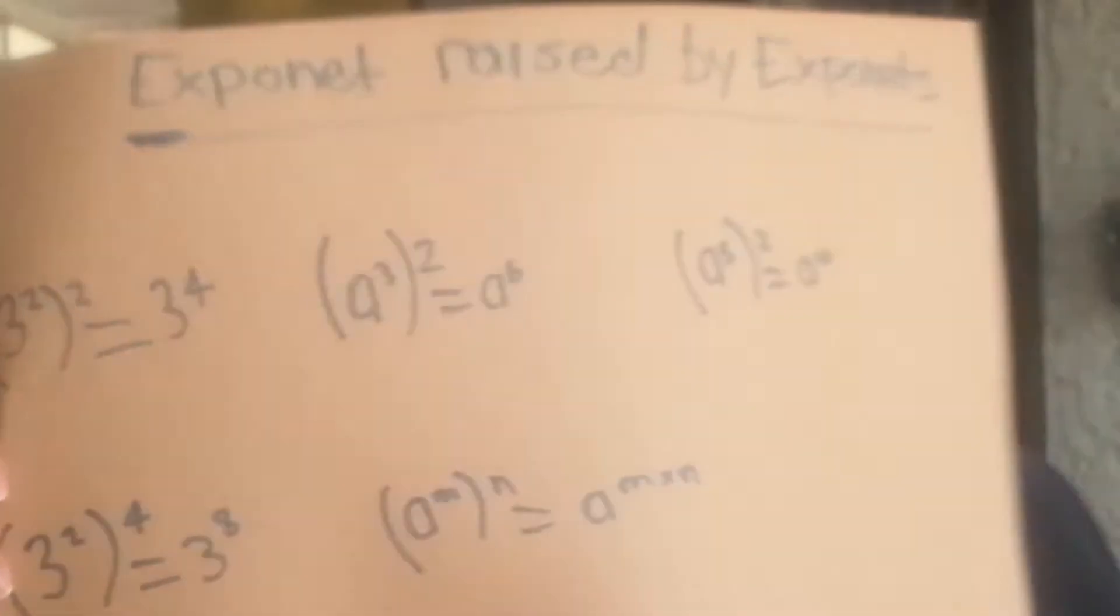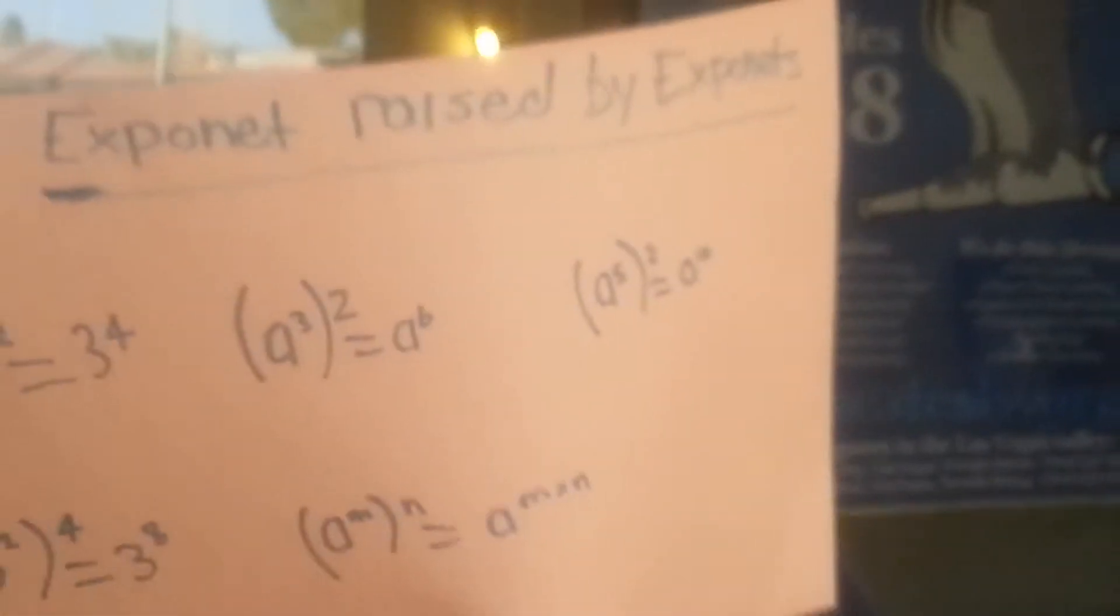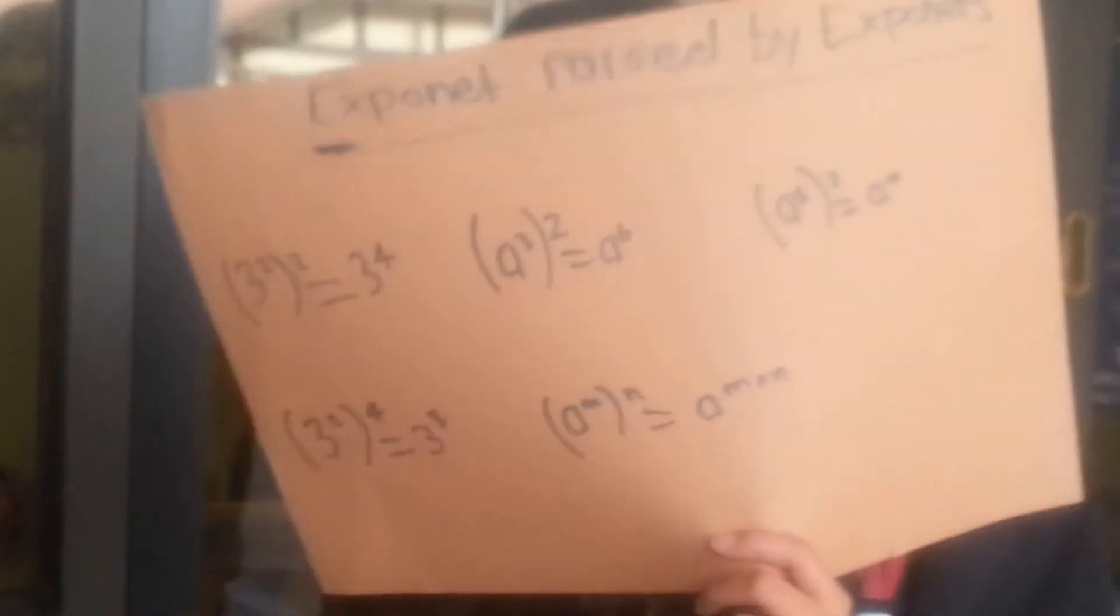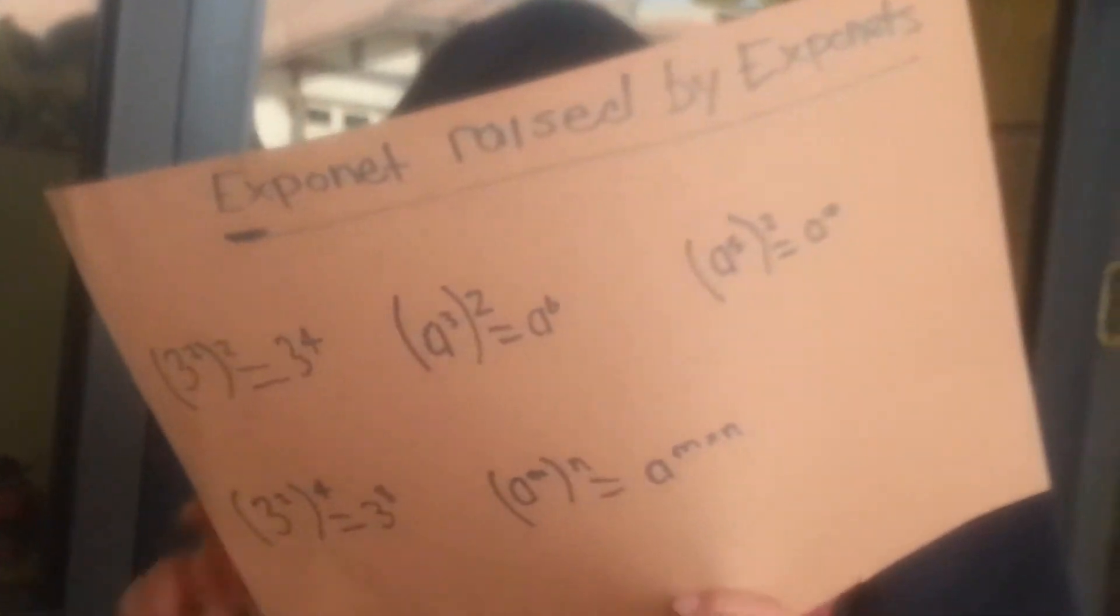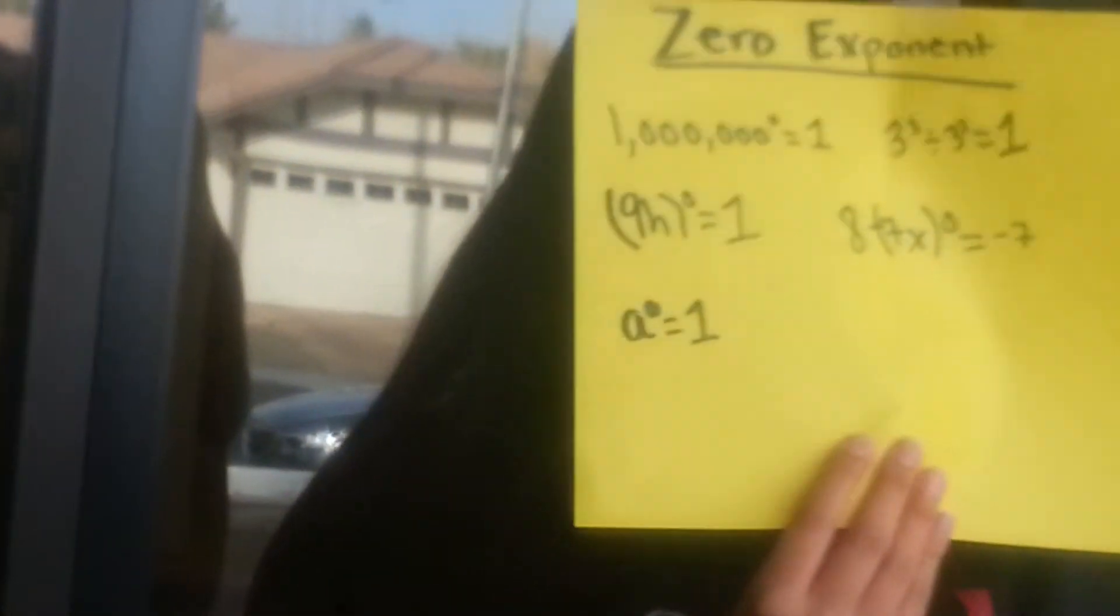Second law of exponents. Fifth law is division, you have to subtract. Fifth law is raising exponents by other exponents.